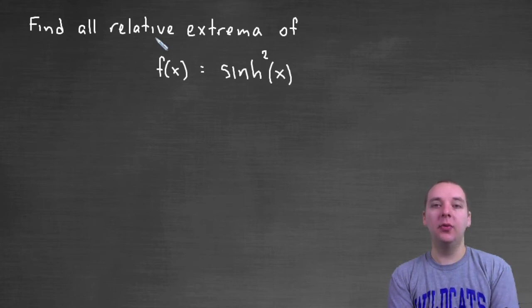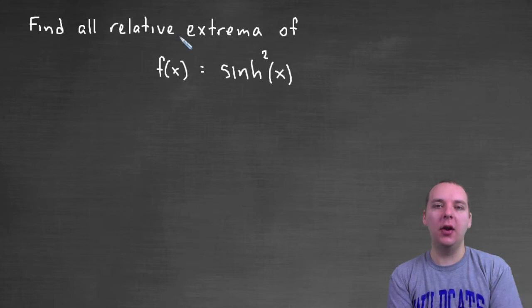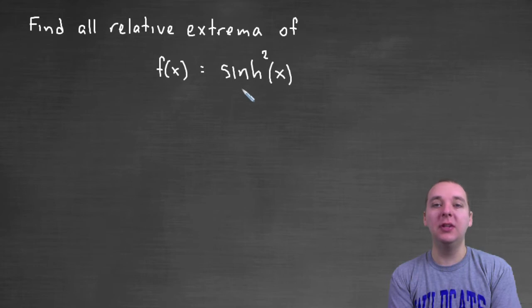In this example we're trying to find all the relative extrema for hyperbolic sine squared of x. This is a topic that we studied in Calc 1 with polynomials and other types of functions, but we're trying to apply this idea of finding relative maxes and mins to these new hyperbolic functions.